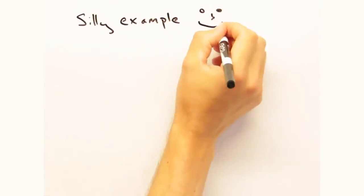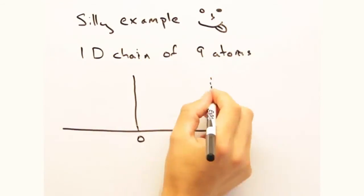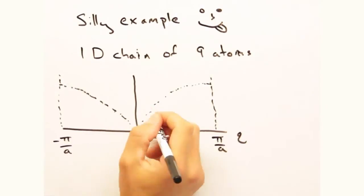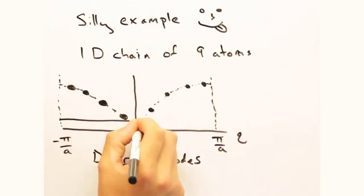To see this a bit clearer, let's look at a 1D chain of 9 atoms. What would its dispersion look like? Well, we already know it should have a sine shape. But instead of a line, we fill it with discrete points with 1 at the origin and 4 on either side as so. Recall that the spacing between points is 2 pi over L.